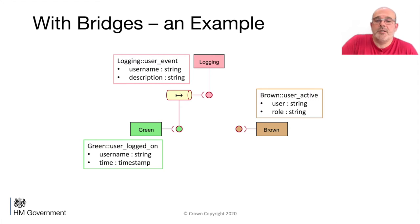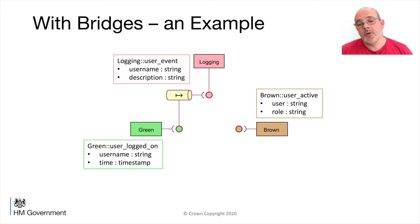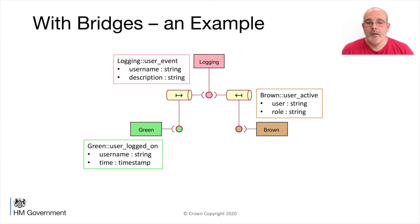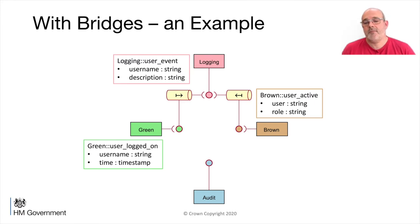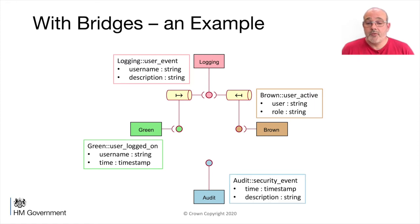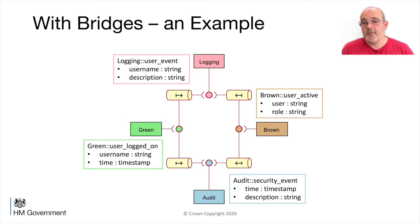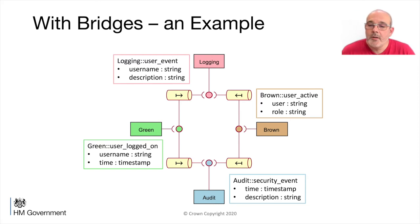Then a brown application comes along with a 'user active' required service with a user parameter and a role parameter. The logging domain might want to put the user in the username and the role in the description, so we have to write a mapping. And then along come the boys in blue - security. They want their audit system to be notified whenever a user logs on and they've got their own API with a timestamp and a description. So again, we have to write a mapping from each of the required domains that want to audit their users - two extra mappings just to add this audit domain in.